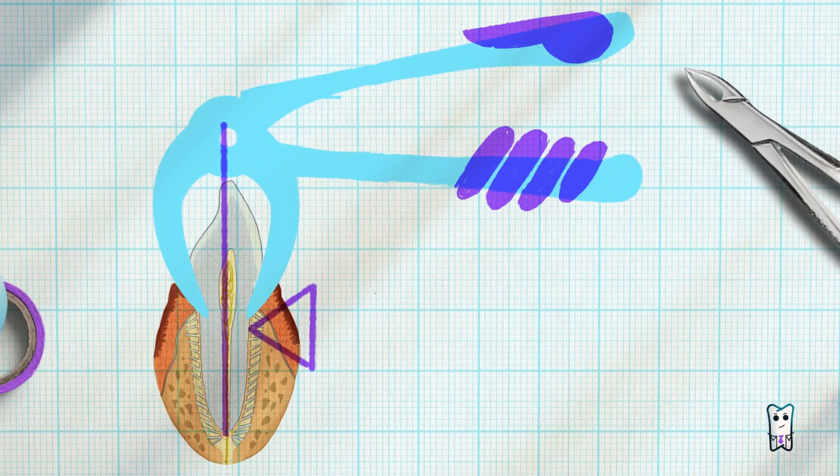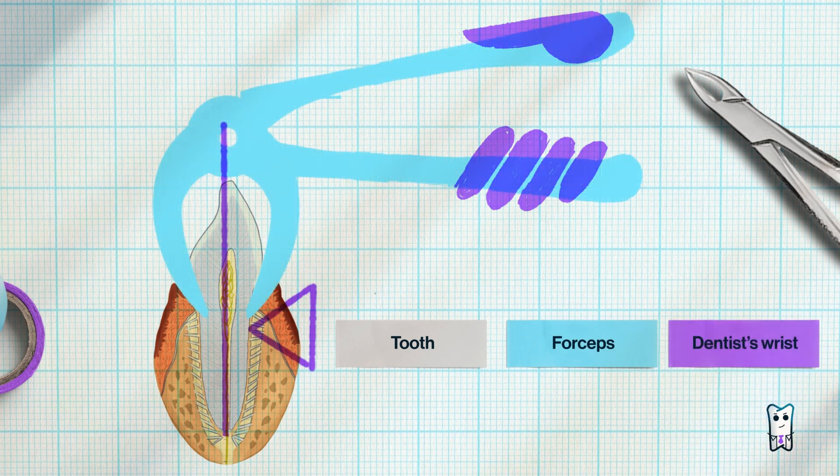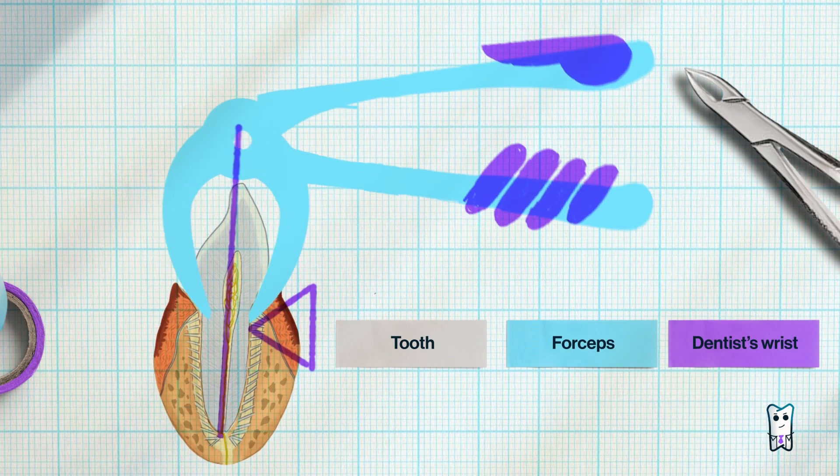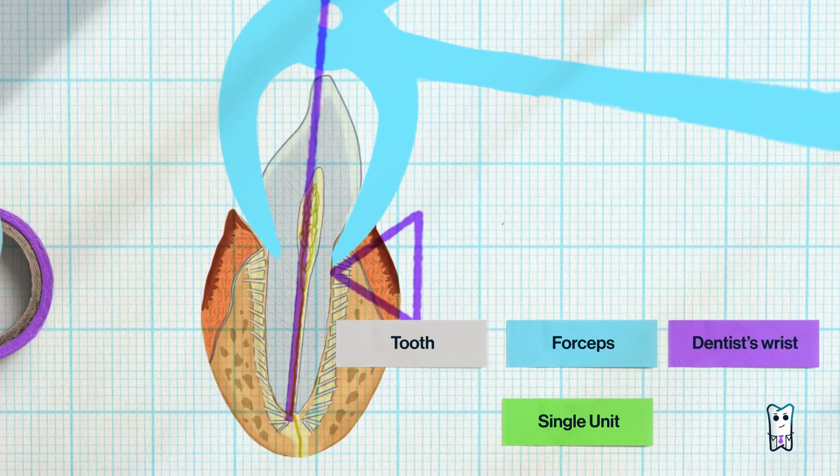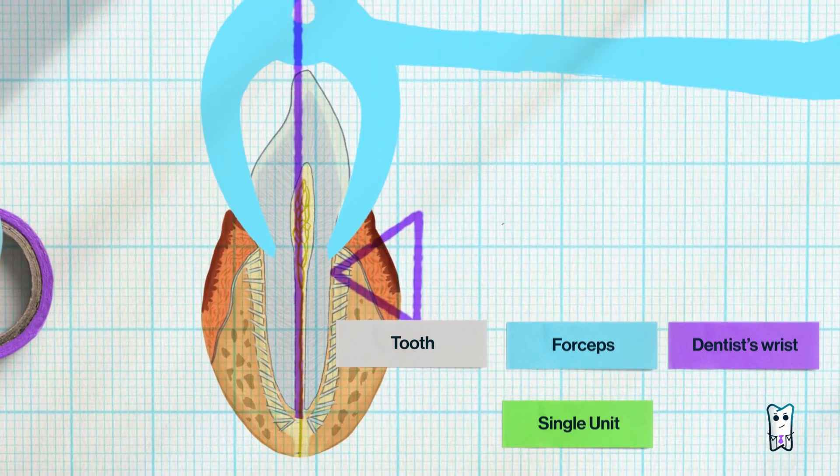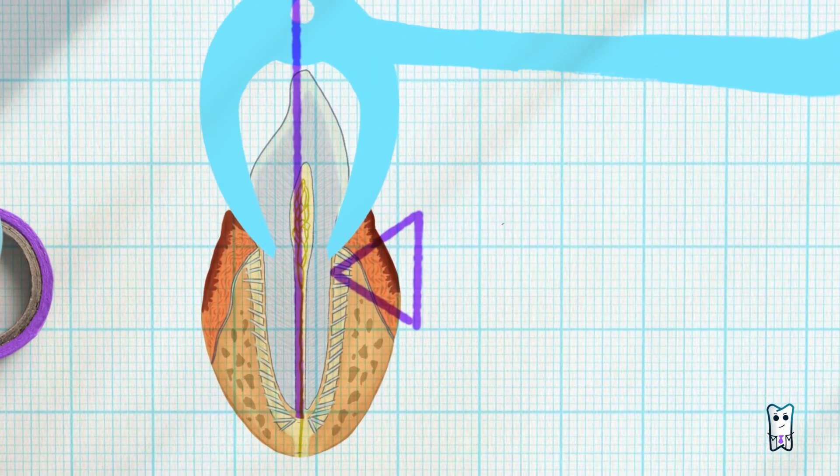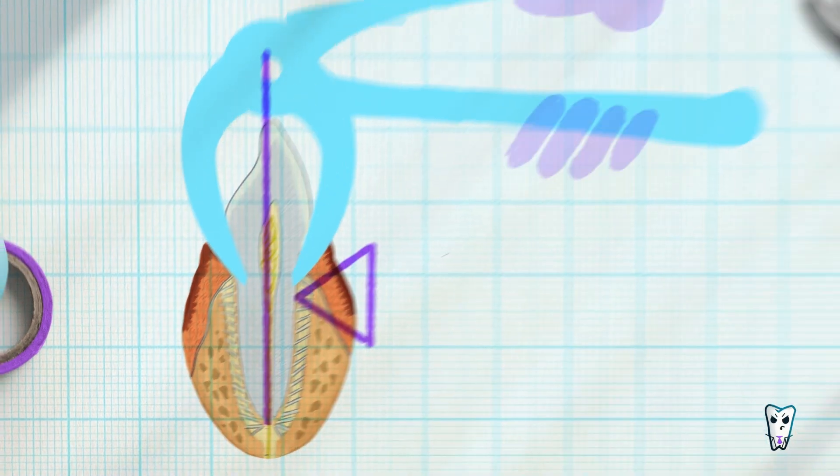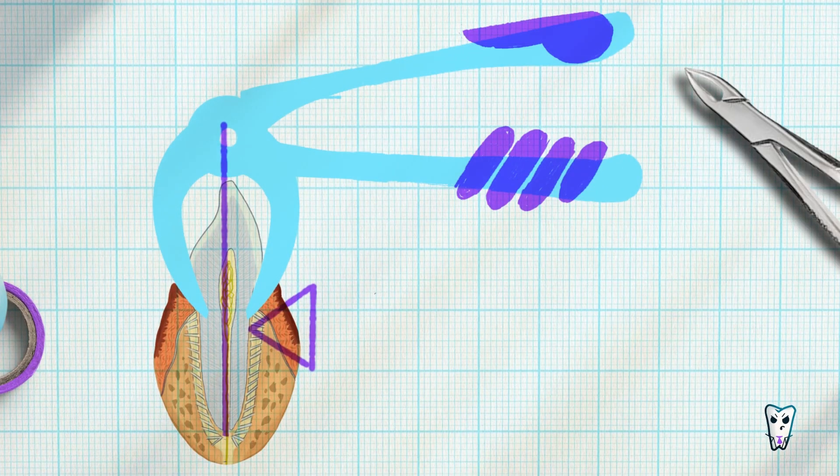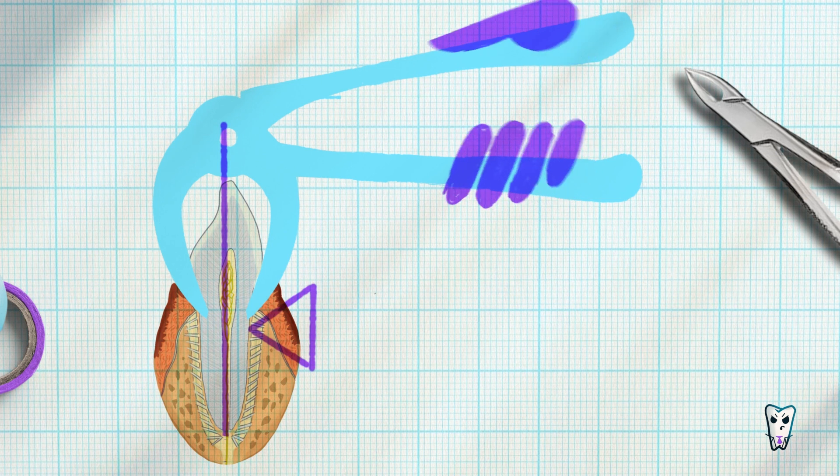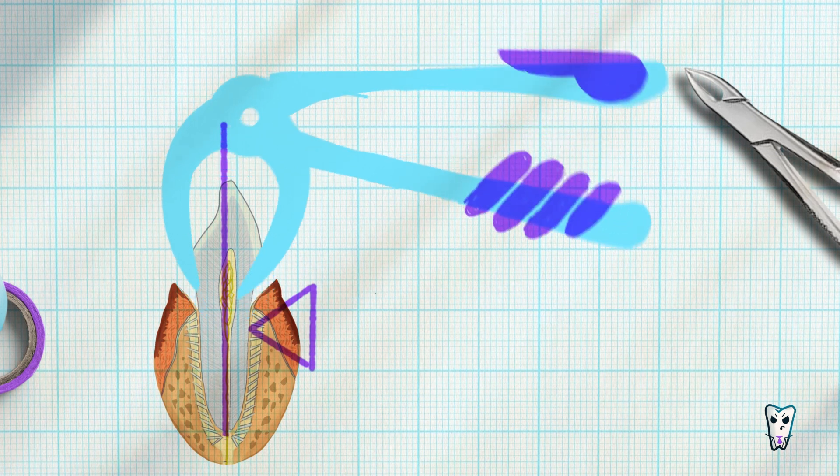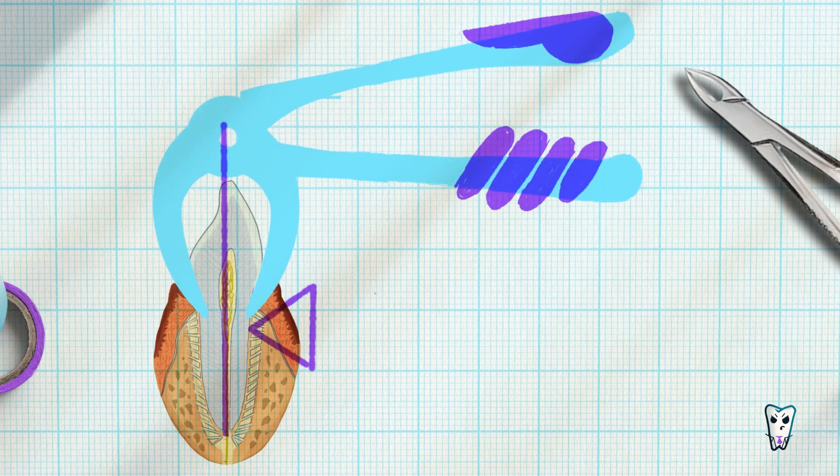The basic concept is this. The tooth, the forceps and the dentist's wrist should function as a single unit. Among these components, the tooth should be the only mobile element. The tooth should move only relative to the bone. If any of the components of this unit start moving independently from each other, this can lead to complications.